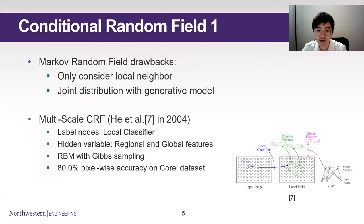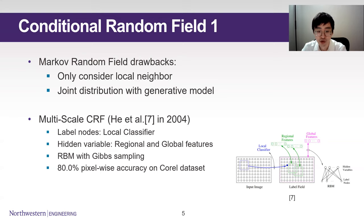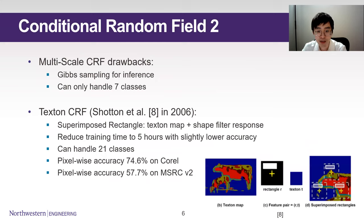First, I will introduce the conditional random field approach. It is said to replace the Markov random field approach, which only cares about local neighbors but loses the big picture of the image. In 2004, He proposed multi-scale CRF, which uses regional feature and global feature together. Regional feature is like, in the picture, a sky pixel is usually above the ground pixel. Global feature is like, a sky pixel is usually at the top of the image. They combine the two features with the local classifier into a restricted Boltzmann machine and chain with Gibbs sampling. However, using Gibbs sampling is inefficient and it can only handle a small number of classes.